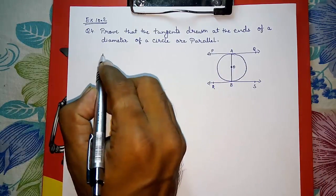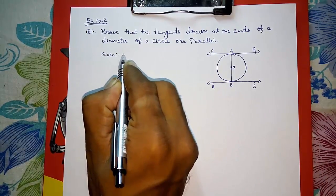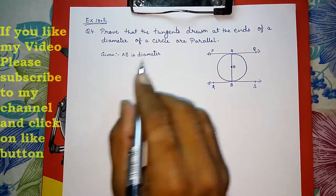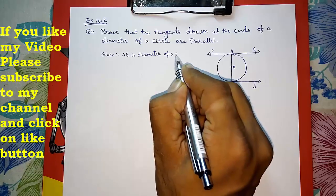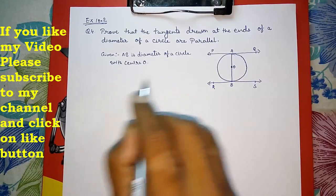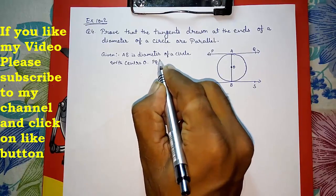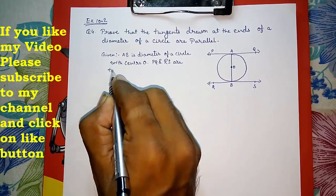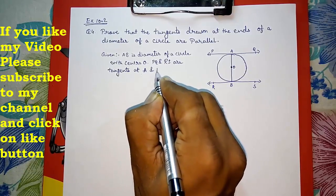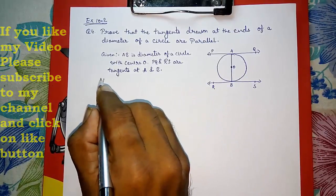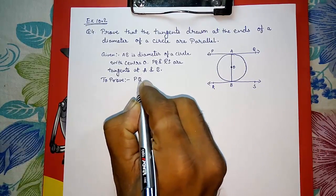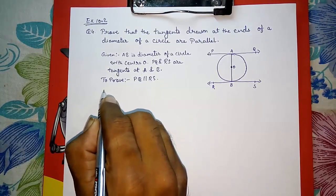Since no figure or point names were given, we first write the Given and To Prove. Given: AB is the diameter of a circle with center O, and PQ and RS are the tangents at A and B to the given circle. To Prove: PQ is parallel to RS.